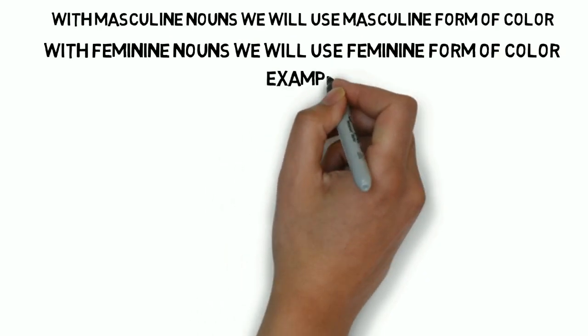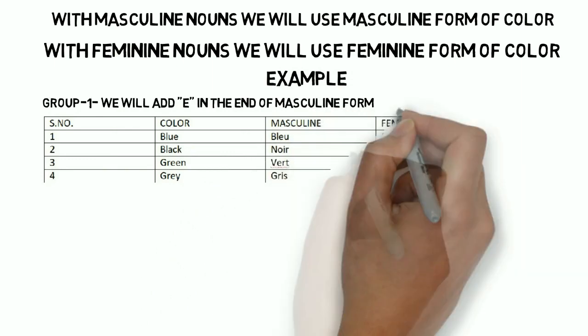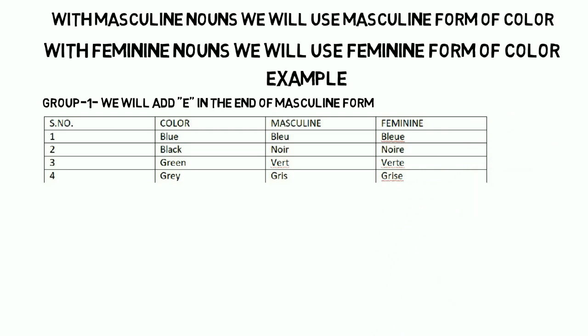For example, the first color is blue. Blue in French is bleu. And the feminine form will also be pronounced as bleu — both will be bleu in pronunciation, but the spelling is going to change. In the feminine form, we are going to add an 'e' at the end. The second color is black, which is noir. The masculine form is N-O-I-R, but in the feminine form, an 'e' is added at the end.